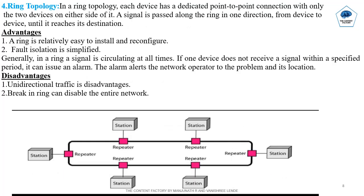Fourth one is Ring Topology. In ring topology, each device has a dedicated point-to-point connection with only the two devices on either side of it. A signal is forced along the ring in one direction, passing from one device to another until it reaches its destination. Advantages: A ring is relatively easy to install and reconfigure. Fault isolation is very easy — if any device does not receive a signal within a specified period, it can issue an alarm, alerting the network operator to the problem and its location.